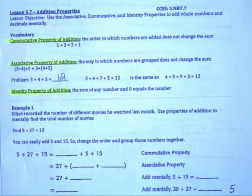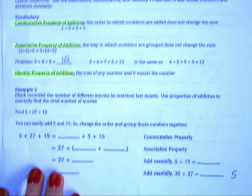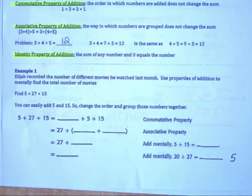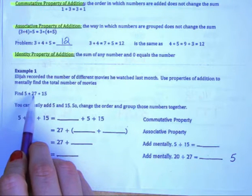Let's go ahead and try a couple example problems with these new properties and see how we do. Example 1 says that Elijah recorded the number of different movies he watched last month. We are going to use properties of addition to mentally find the number of movies. So he recorded the numbers 5, 27, and 15. So we need to find 5 plus 27 plus 15.